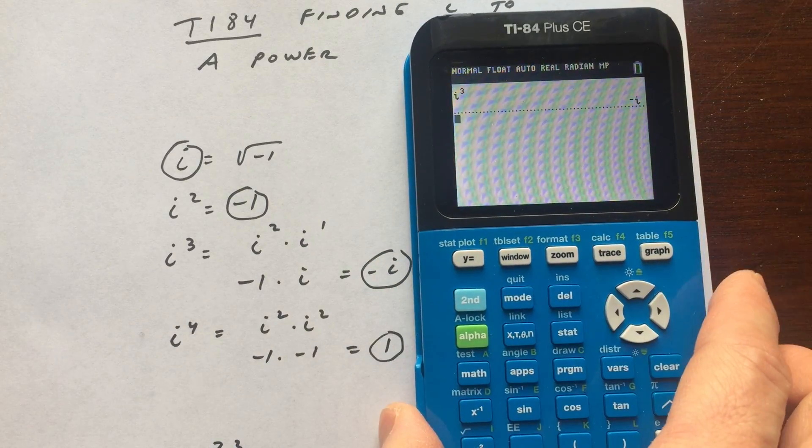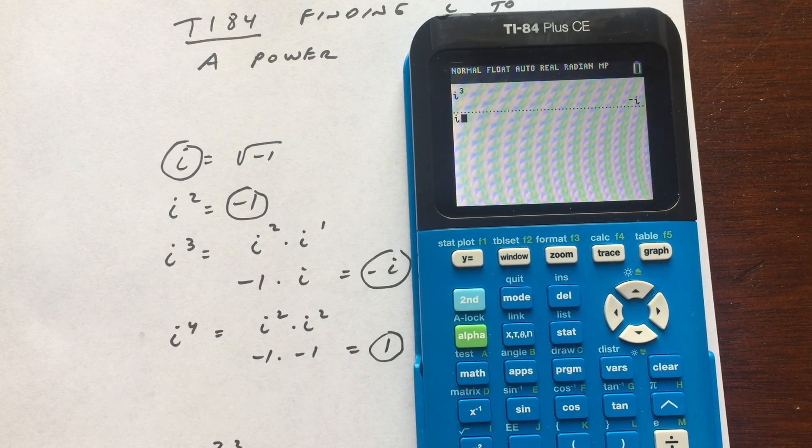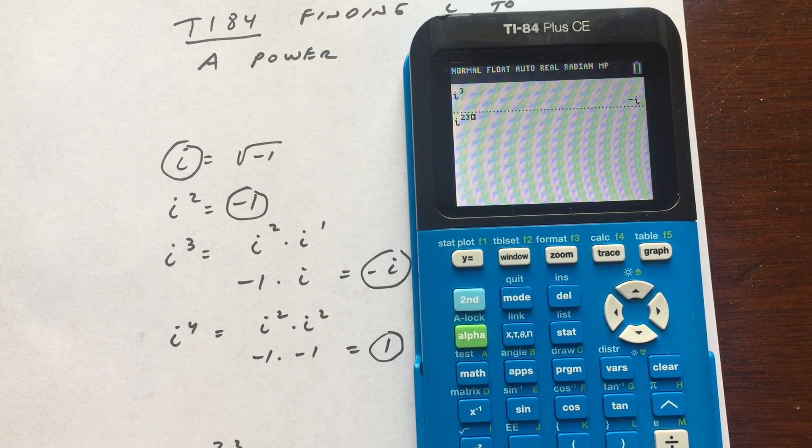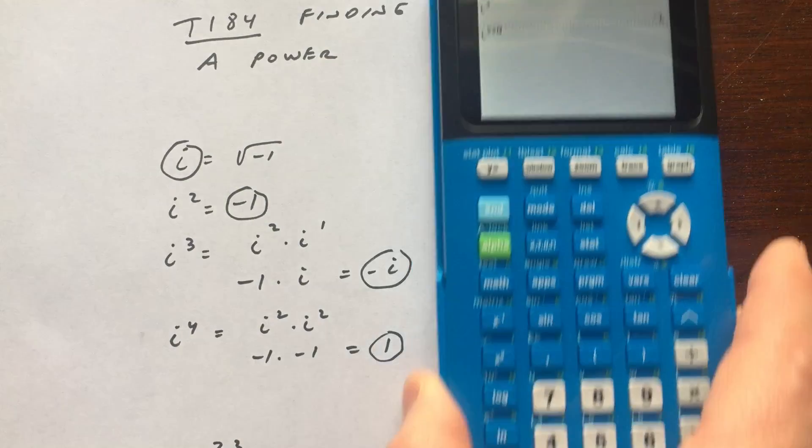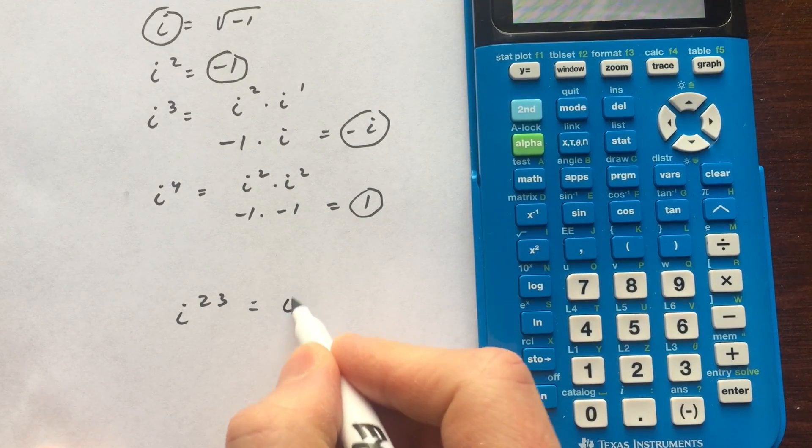Now let's go ahead and do it to a higher power. So say, for example, if it was i to the 23rd power. So we've got 2nd i raised to the 23rd power. And before we go ahead and hit enter on that, let's go ahead and calculate what that would be. So i to the 23rd, what we can do is we can do this a couple different ways.